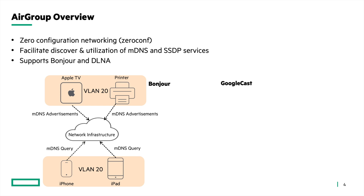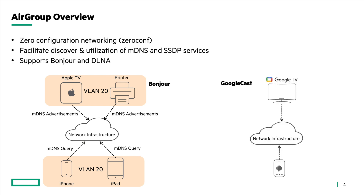Another popular service is Google's Google Cast service, used for playing internet-streamed audio-visual content on a compatible consumer device. Depending on the application, devices either send SSDP packets or MDNS query packets to discover devices offering Google Cast on the network. Devices that offer Google Cast advertise it using MDNS advertisement packets. SSDP uses multicast, so queries and advertisements can only be forwarded on their respective VLAN, not across different VLANs.